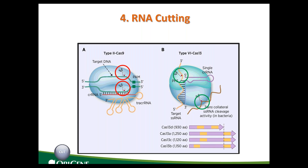Another big difference between Cas9 and Cas13 is the consequence. DNA cut leads to a double strand break and then triggers the DNA repair mechanism. But for RNA cut, the RNA fragment will lose protection from its 5' end and 3' end, so it will become very easily degraded.